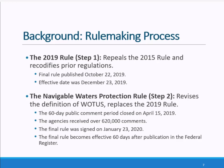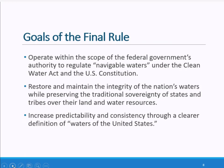After carefully considering the many public comments on the proposed rule, on January 23, 2020, the agencies signed the final Navigable Waters Protection Rule definition of Waters of the United States. This revised definition establishes the scope of federal regulatory authority under the Clean Water Act. The agencies began this effort in March of 2017 with the goals of operating within the scope of the federal government's authority to regulate navigable waters under the Clean Water Act and under the U.S. Constitution, and to restore and maintain the integrity of the nation's waters while preserving the traditional sovereignty of states and tribes over their land and water resources.